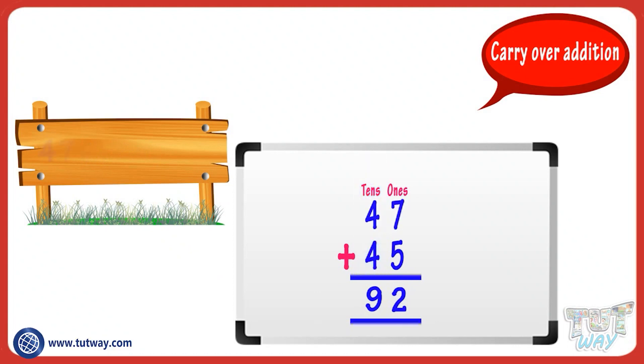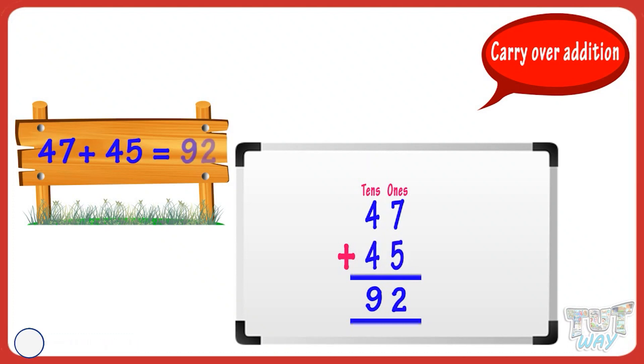We got it! 47 plus 45 equals 90. Let's do some more sums for practice.